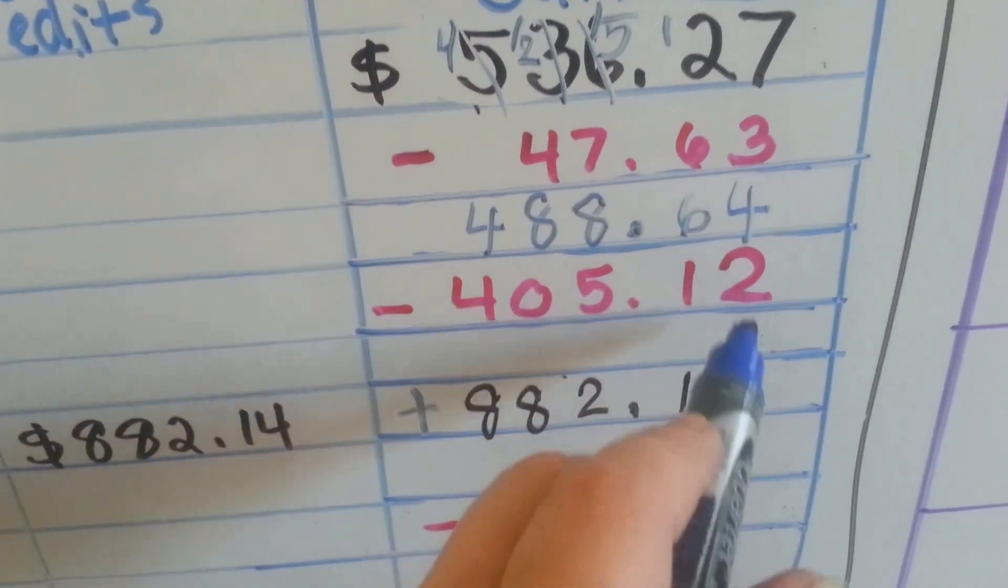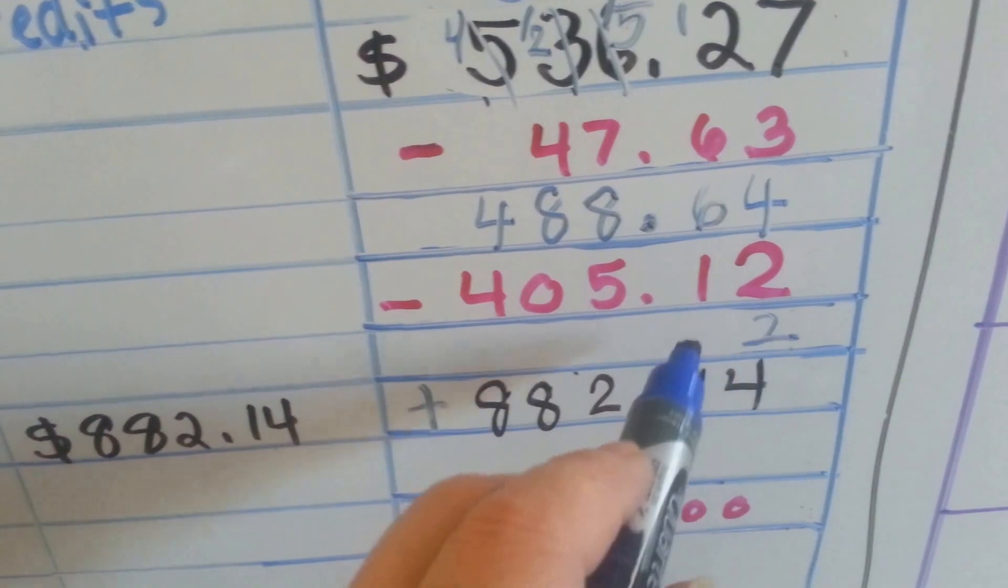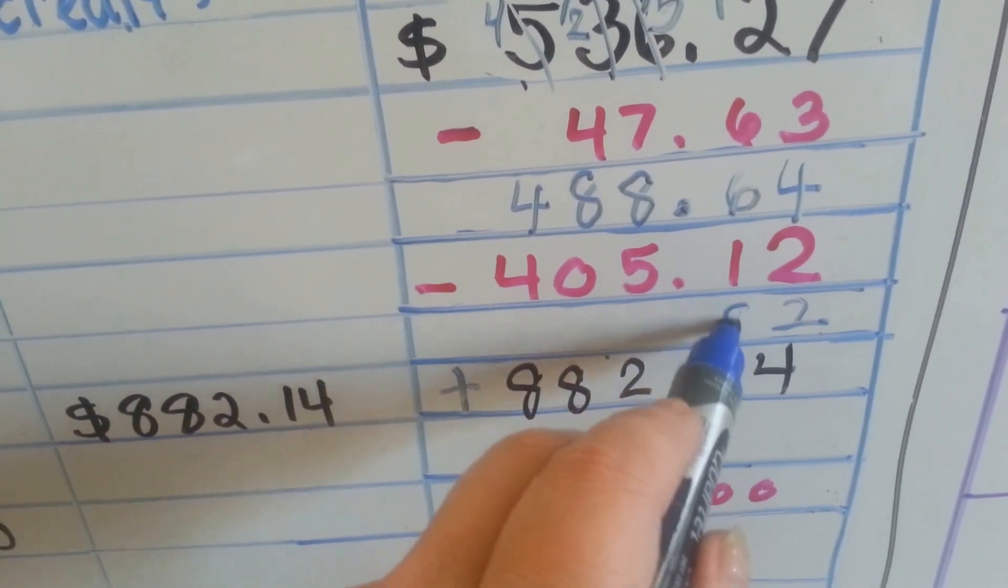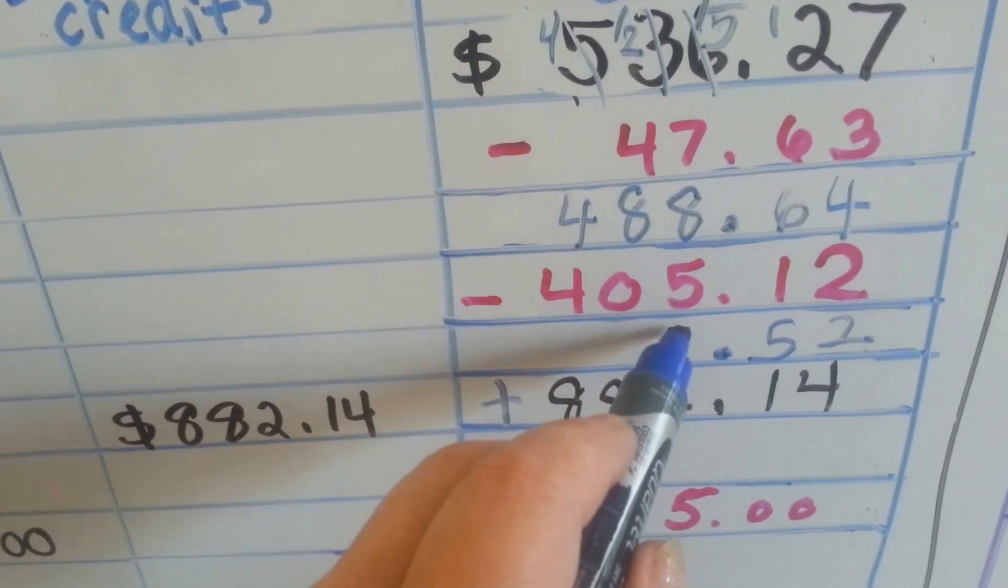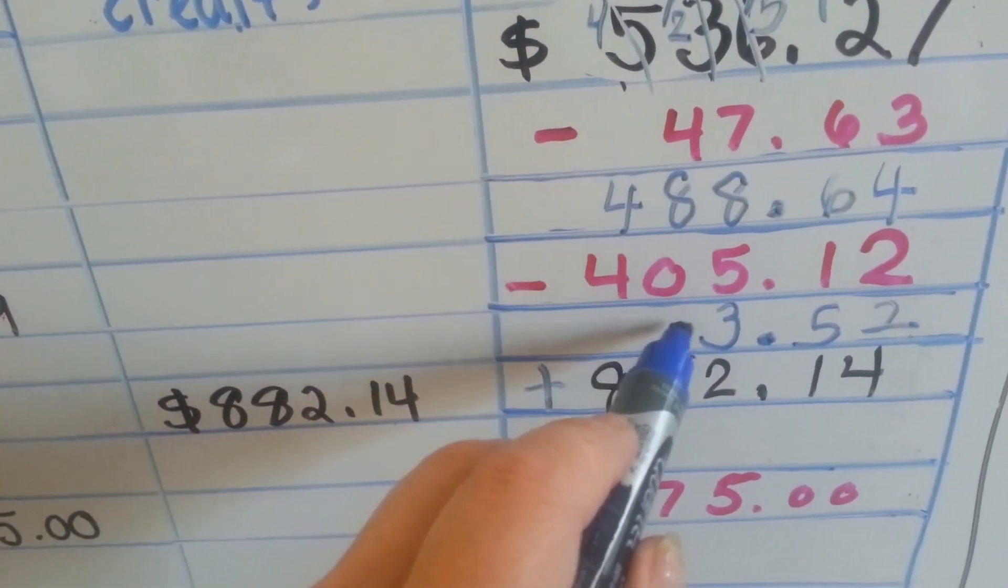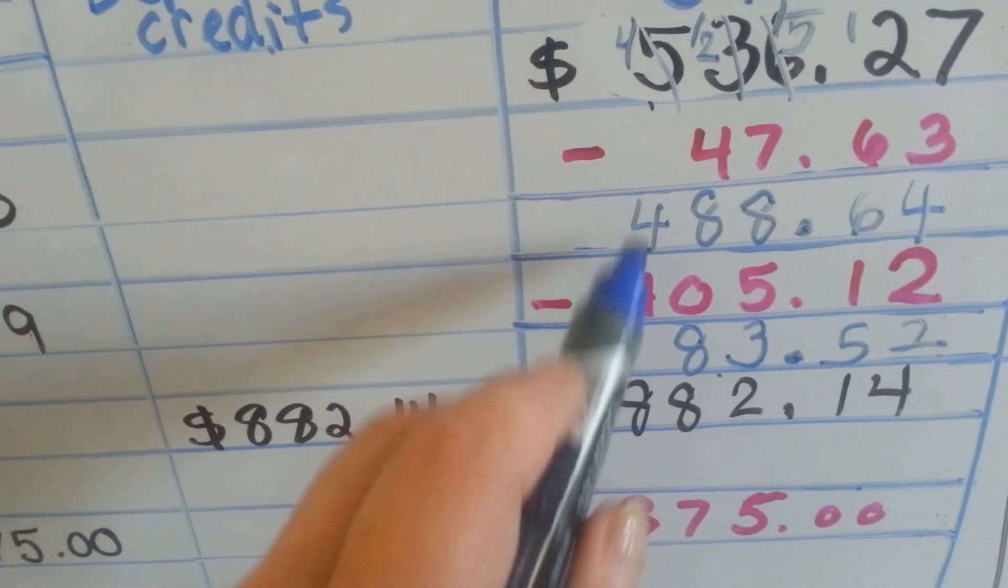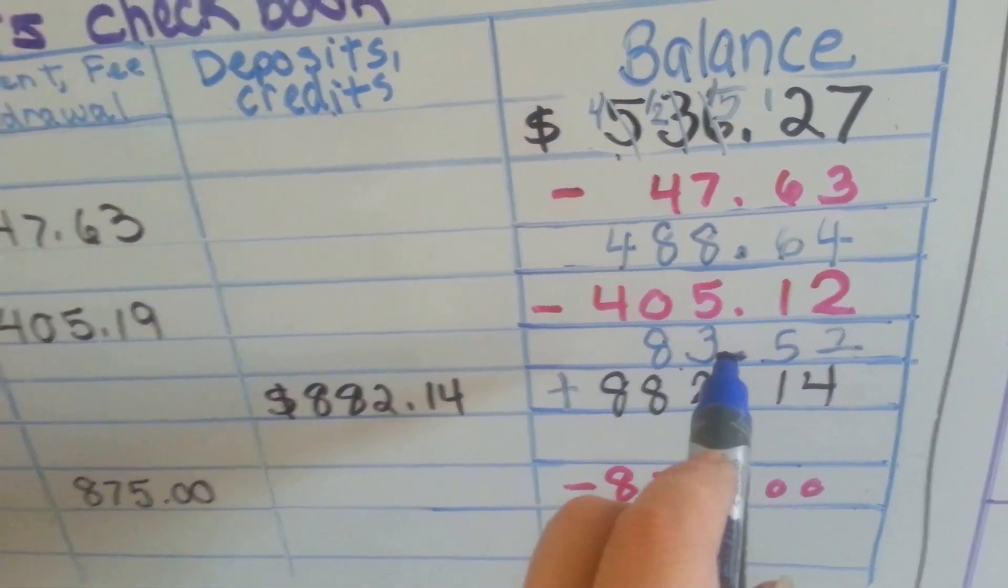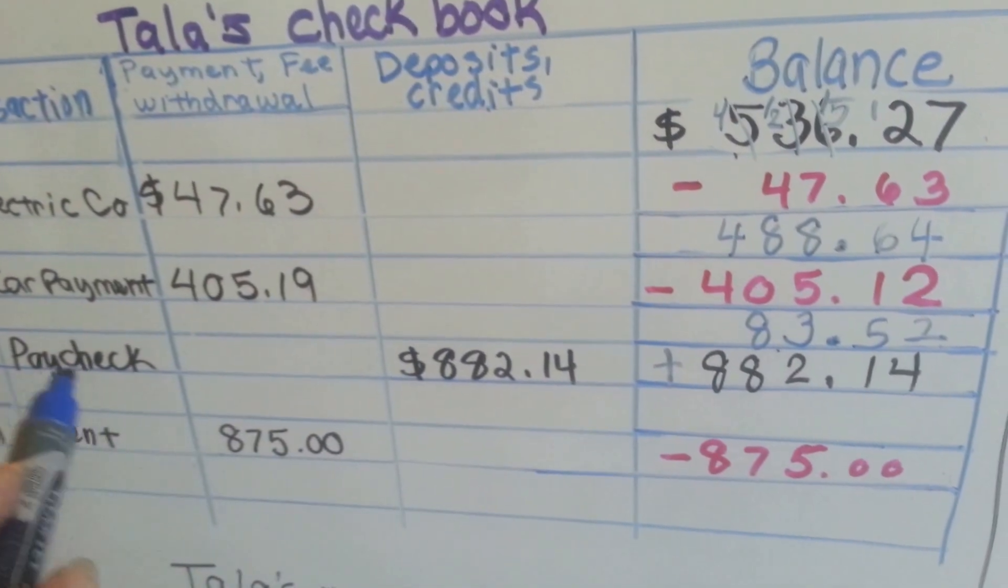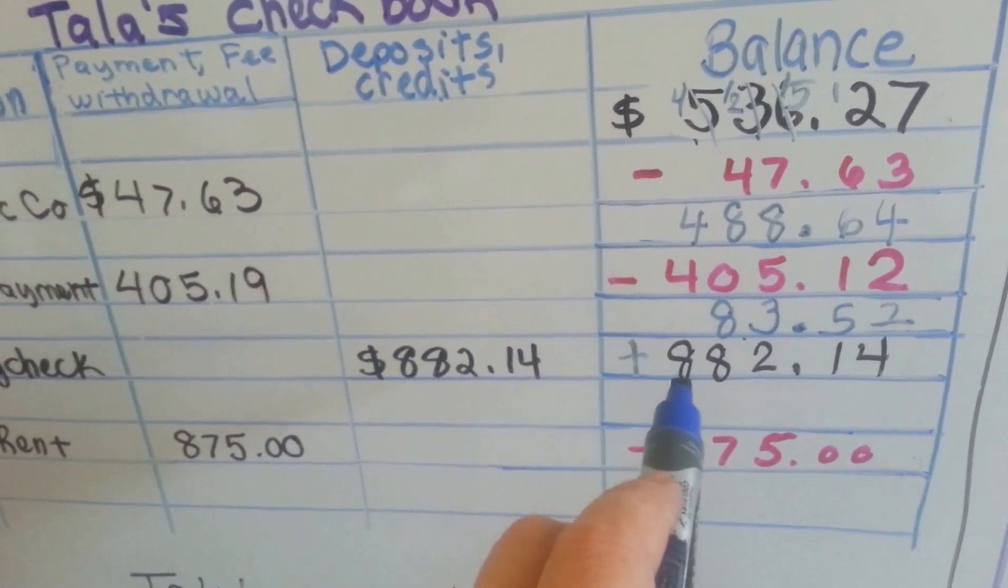4 take away 2 is 2. 6 take away 1 is 5. We put our decimal point. 8 take away 5 is 3. 8 take away 0 is 8. And the 4's cancel each other out, so now she's got $83.52. But now she got her paycheck, thank goodness.